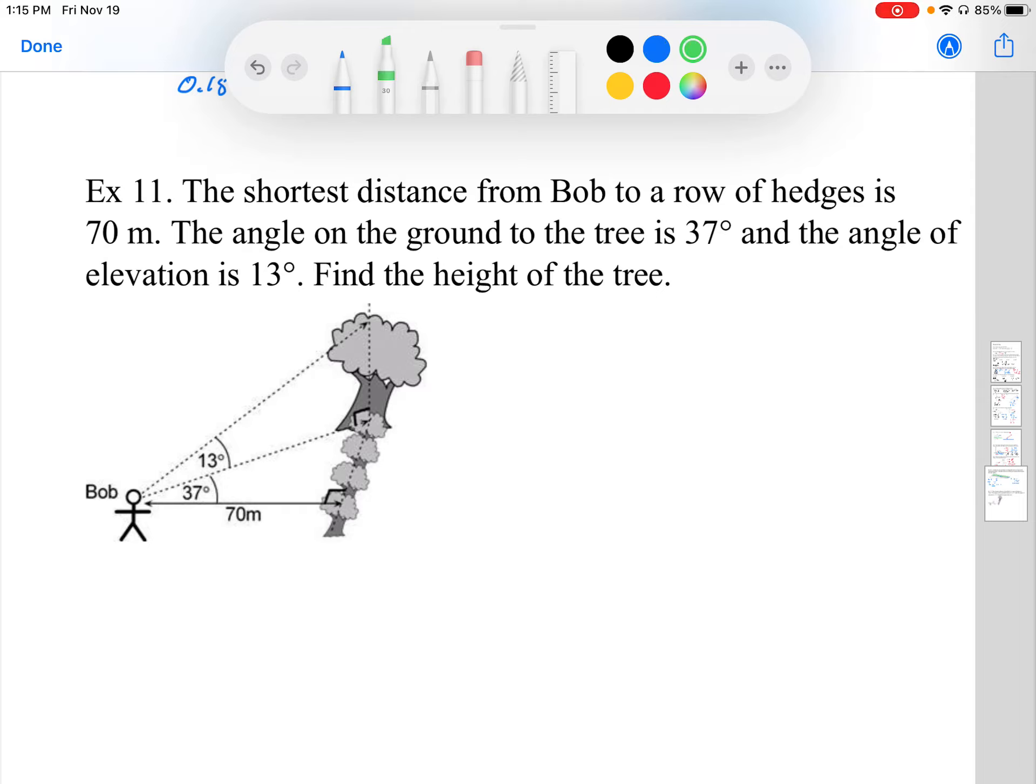Now what's important in this problem is we have to first of all understand this diagram, that it's actually three-dimensional. So we have in one plane this triangle here. So that's going to be a right angle triangle on the ground. Now from the ground we are going to have this triangle going up from the ground. We have a 90 degree triangle there.